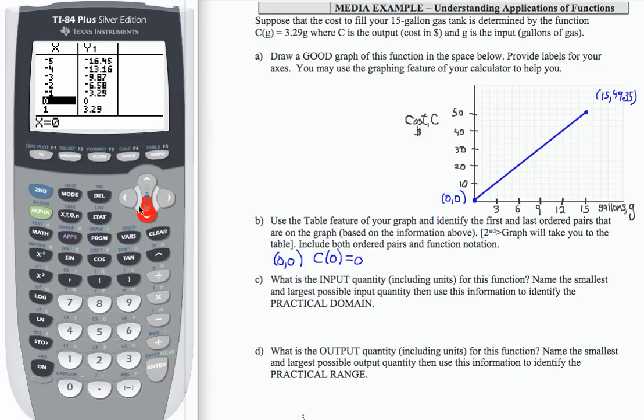Then if I go on up to my maximum, which is 15, I can go ahead and just use my arrow keys to get there. Since it's not that far, I see I'm going to have the ordered pair (15, 49.35). So my function notation would be C of 15 equals 49.35.